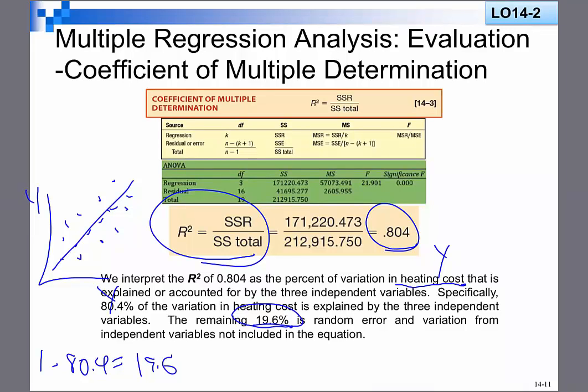In other words, there are some other variables out there which explain heating costs. It could be location, it could be the heights of the house. I mean, you could imagine probably 10 other variables which help to explain why the heating costs are high or low. So those other 10 variables would be in this 20% of the remaining explanatory power or the random error and variation.